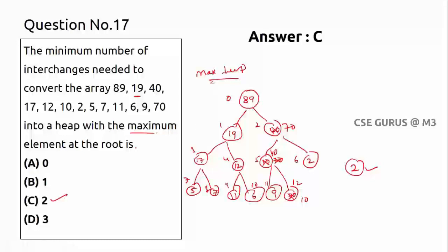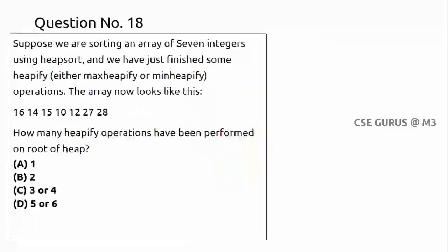We swap whenever an element is not following the heap property. Moving to question 18: we are sorting an array of seven integers using heap sort and have just finished some heapify operations. Whenever a heap tree is constructed, we extract the heap value from it.